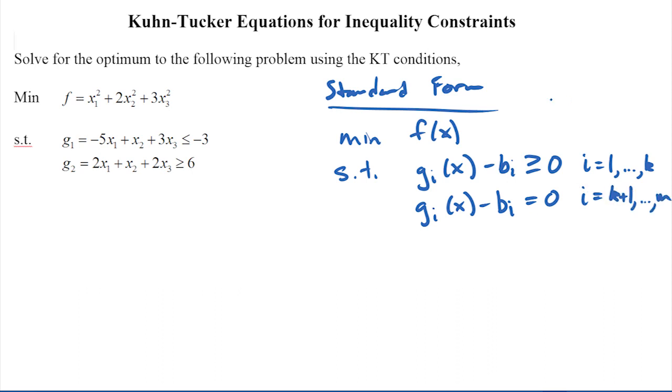So I have m constraints total, and then I have k inequality constraints and m minus k equality constraints. So the equal sign versus inequality sign there.